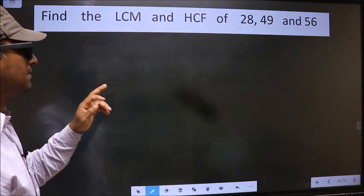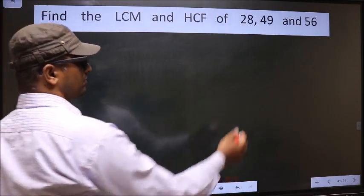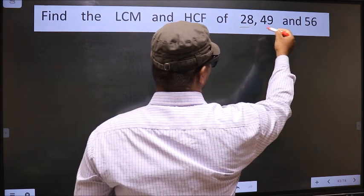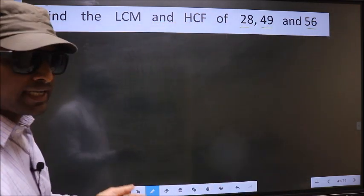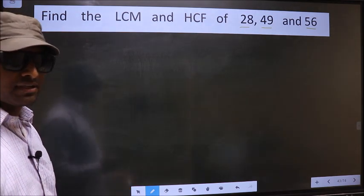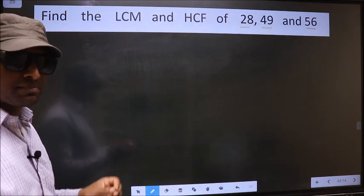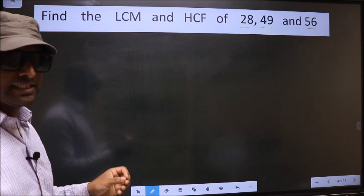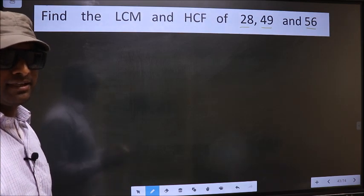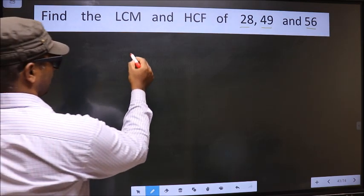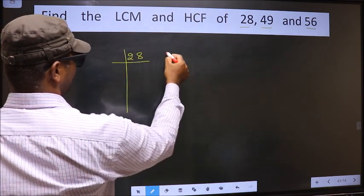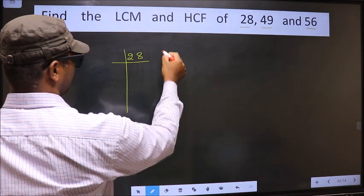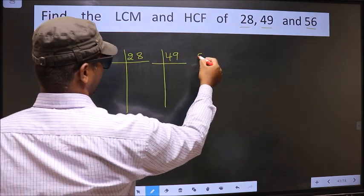Find the LCM and HCF of 28, 49 and 56. To find the HCF and LCM, first we should do the prime factorization of each number separately. That is, 28, 49, 56.